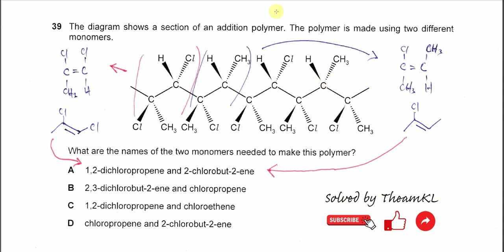Question 39. The diagram shows a section of an addition polymer. The polymer is made using two different monomers. What are the names of the two monomers needed to make this polymer?